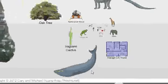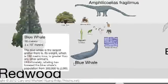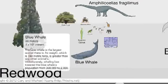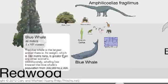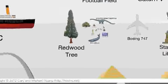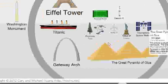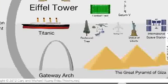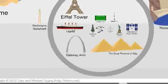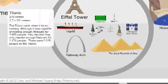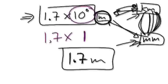Then you can zoom out to a blue whale. The average blue whale is 3 times 10 to the power of 1. Keep zooming out to the pyramid, the Eiffel Tower, and then the Titanic. The Titanic is 2.7 times 10 to the power of 2.